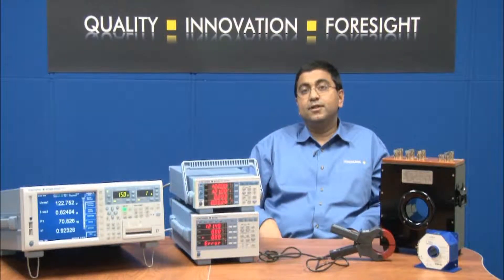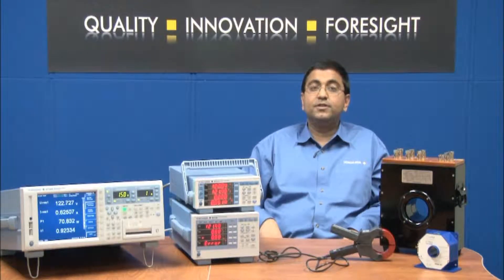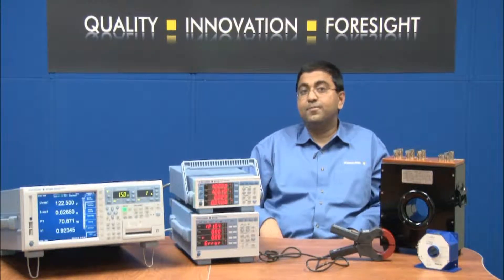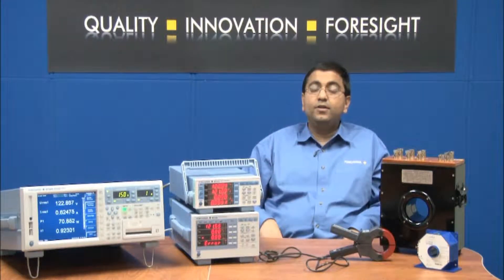In summary, for Yokogawa power analyzers, when measuring large currents, wire the circuit such that the voltage measurement circuit is connected to the load side. And when measuring small currents, wire the voltage measurement circuit to the source side.